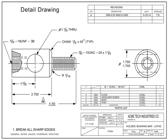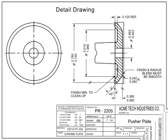A machine drawing details all the information required to take raw material and turn it into a finished part. The machining tolerances, material, finishes, etc. are all shown on the detail drawing. Machine drawings are detail drawings that require machining to create the end product.